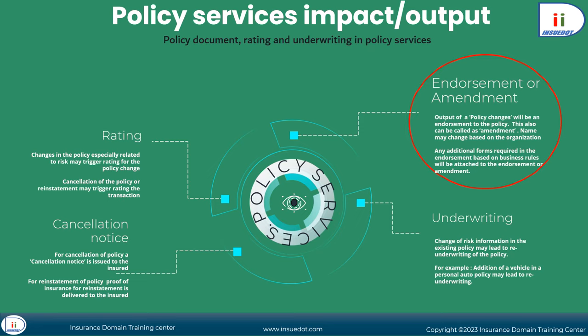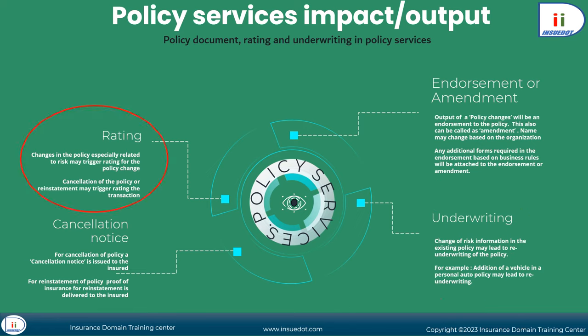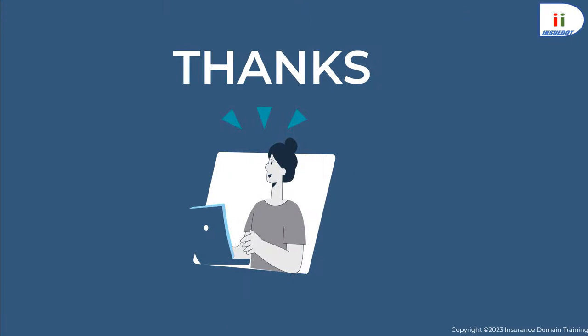A policy service transaction may trigger underwriting again if there is a change in risk information; however, the underwriting rules of the specific organization determine when underwriting is required during policy changes. A policy service transaction may also trigger rating if premium recalculation is needed. If the transaction is non-financial in nature — like a phone number or address change — rating may not be needed. A cancellation or reinstatement of a policy may trigger additional documents.